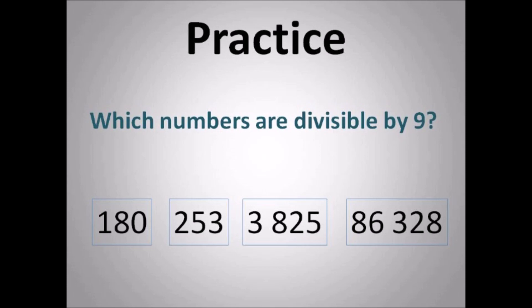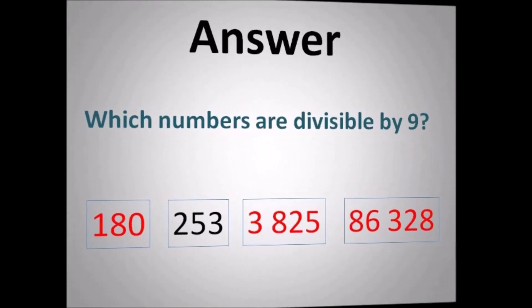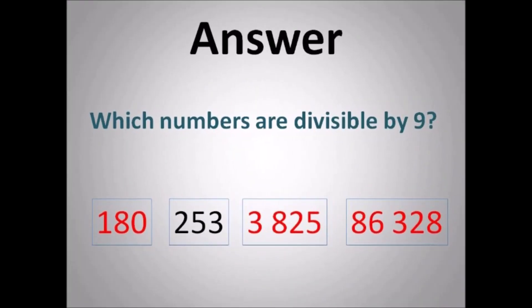Okay, let's practice — which numbers are divisible by 9? Add the digits up and see if you get a multiple of 9. So 1 plus 8 plus 0 is 9. For 253, the digits add to give 10, then further to 18 — divisible. For 3,825,86,328, you add that up and get 10, then 19, then 27 — that's a multiple of 9. So those three are the answers.